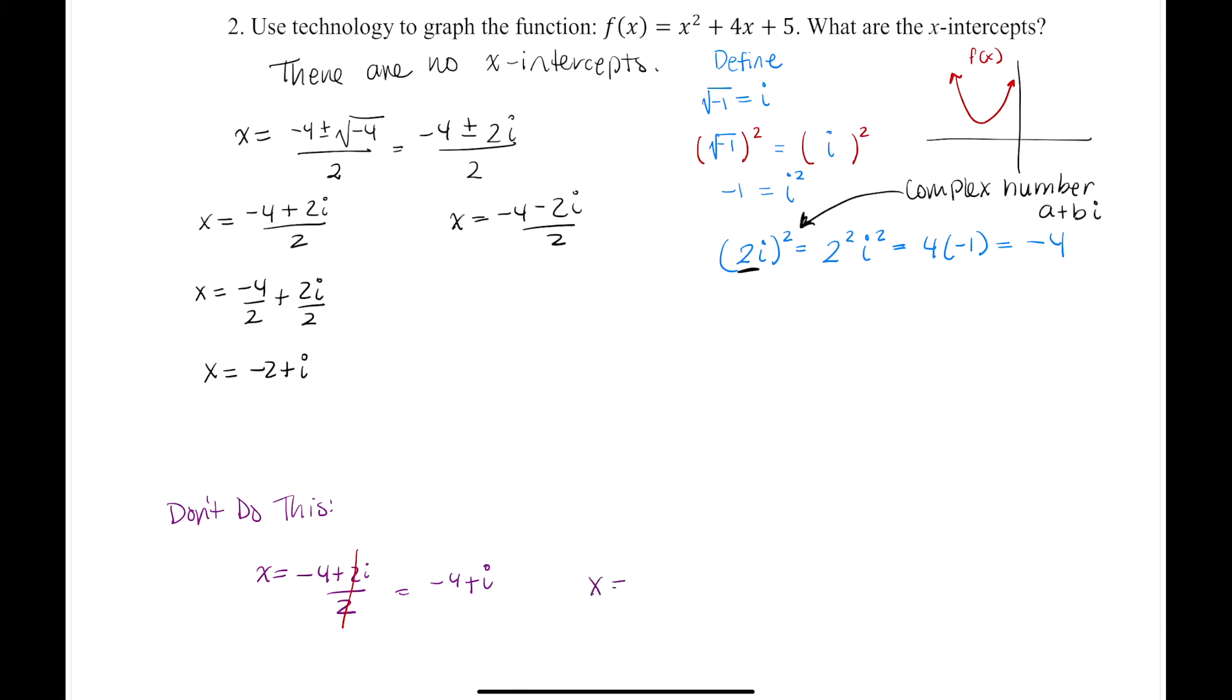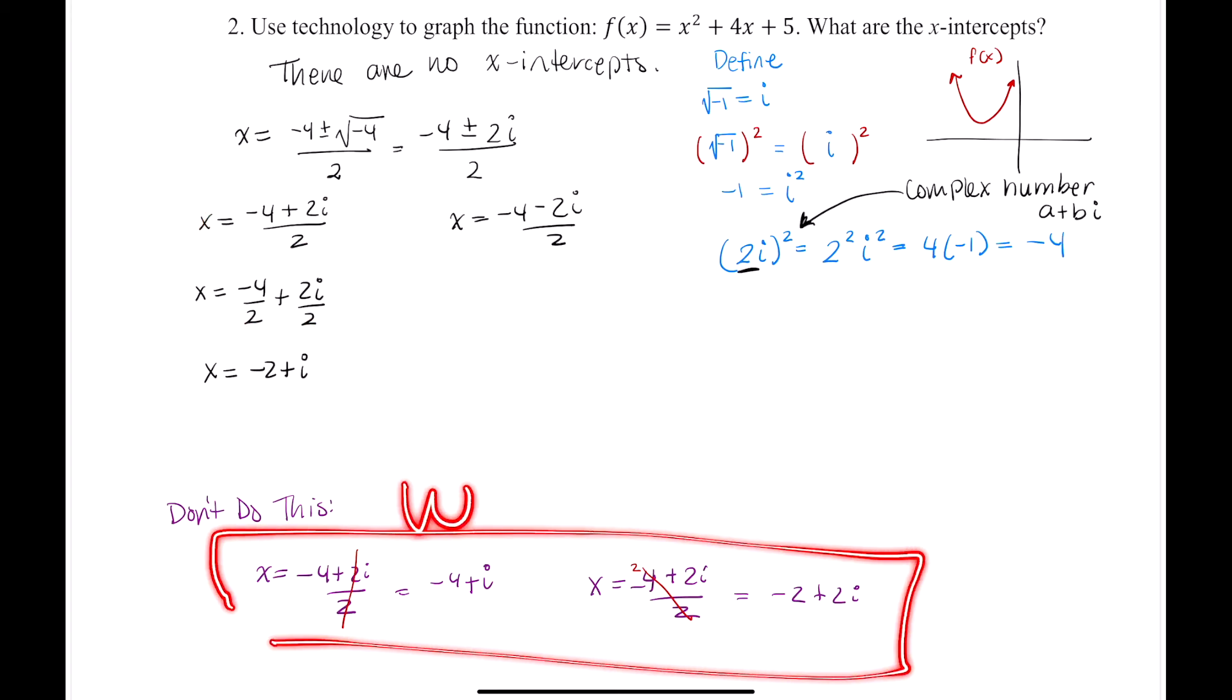Also be warned, it's not okay to cross this out and just leave a 2, and then write this as negative 2 plus 2i. As you can see, we need negative 2 plus i, because this number splits up into two fractions, negative 4 halves and 2i over 2. These are my two fractions. So don't do this. Your work will always be wrong if you do this. So don't do that.